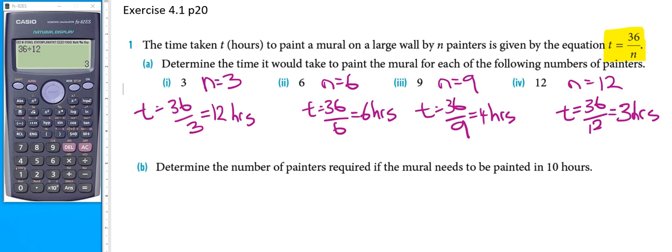When you double the number of painters again from 6 to 12, it halves from 6 hours to 3 hours. Overall, when we go from 3 painters to 12 painters, that's 4 times as many painters, so we divide the time by 4. Therefore, 12 divided by 4 equals 3.